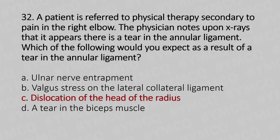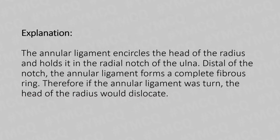The annular ligament encircles the head of the radius and holds it in the radial notch of the ulna. Distal to the notch, the annular ligament forms a complete fibrous ring. Therefore, if the annular ligament were torn, the head of the radius would dislocate.